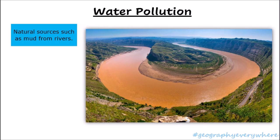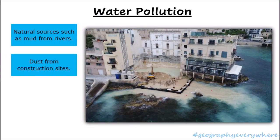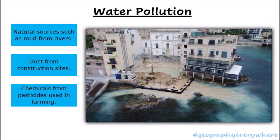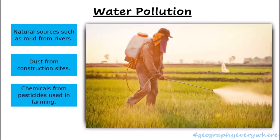Sometimes polluted water looks muddy, it smells bad, and has garbage floating in it. Sometimes polluted water looks clean, but it is filled with harmful chemicals that you can't see or smell. Sometimes when there are construction sites close to the sea, the dust from the building can end up in the sea. The dust in the sea can damage habitats and even poison or kill marine plants and animals. Sometimes chemicals from pesticides used in farming also harm the environment. Another major source of water pollution is fertilizer used in agriculture.